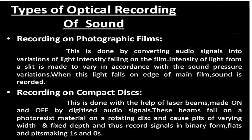Now, the two categories of optical recording: recording on photographic films and recording on compact disc. Recording on photographic films is done by converting the audio signal into variations of light intensity falling on the film. Intensity of light from a slit is made to vary in accordance with sound pressure variation, and when this light falls on the edge of the main film, sound is recorded. Recording on a compact disc is done with laser beams switched on and off by digitized audio signals. These beams fall on a photoresist material on a rotating disc, causing bits of varying width and fixed depth, recording the signal in binary form as flats and pits making 1s and 0s.